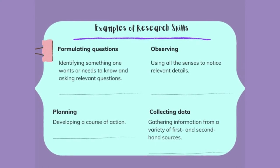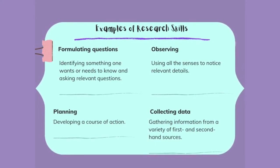Research skills. Some examples of research skills are: formulating questions, in which students identify something one wants or needs to know and ask relevant questions around this; observing, in which they use all of the senses to notice relevant details; planning, in which they develop a course of action; and collecting data, whereby they gather information from a variety of first- and second-hand sources.